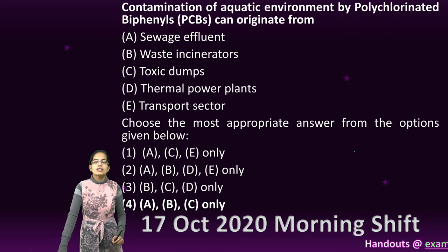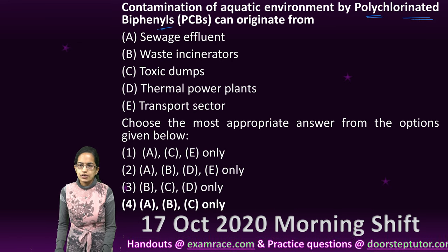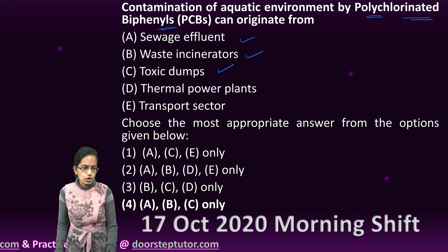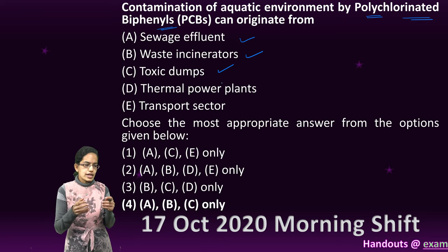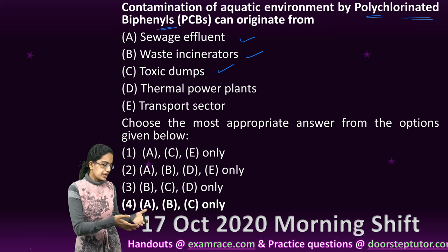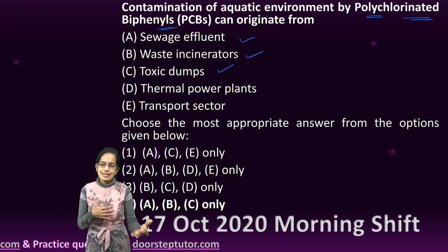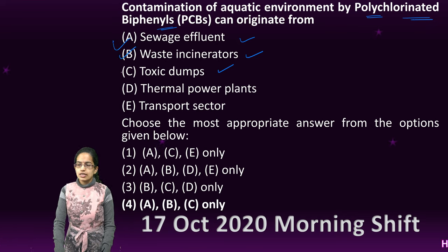The next question talks about the aquatic environment, which is affected by polychlorinated biphenyls (PCBs). These can originate in sewage, waste incinerators and toxic dumps — all three are the right choices. They are mainly seen with sewage and result from man-made chemicals produced in cement, transformer oils, paints and electronic components, which are then released into water bodies. So toxic dumps, waste incinerators and sewage effluents are the right option.